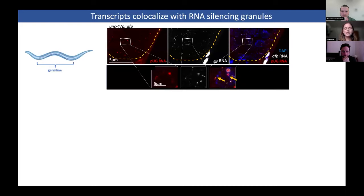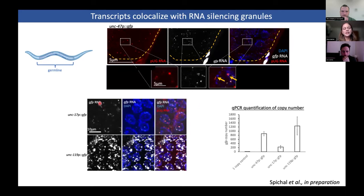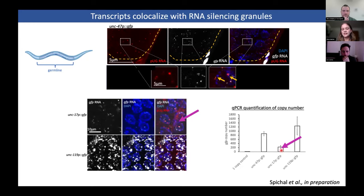We then also wanted to know if this was the case for other multi-copy transgenes, and we could see a similar phenomenon with two other multi-copy transgenes. Interestingly, we could also see that the abundance of the GFP RNA transcript correlated with the abundance of the DNA copy number of the specific multi-copy transgene, indicating that the RNA transcript number was dependent on the GFP copy number.